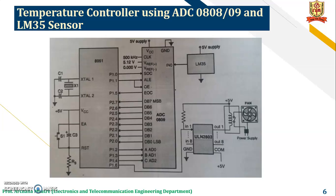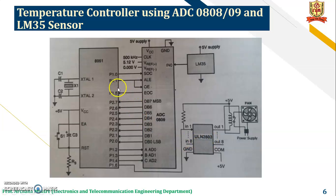The next application is temperature controlling using an ADC, that is an analog to digital converter IC 0808 or 0809, and the LM35 sensor. This is the interfacing diagram where the 8051 microcontroller is interfaced with the ADC converter IC 0809. This is the LM35 sensor. Port 1 and port 2 of the microcontroller are used for the interfacing.